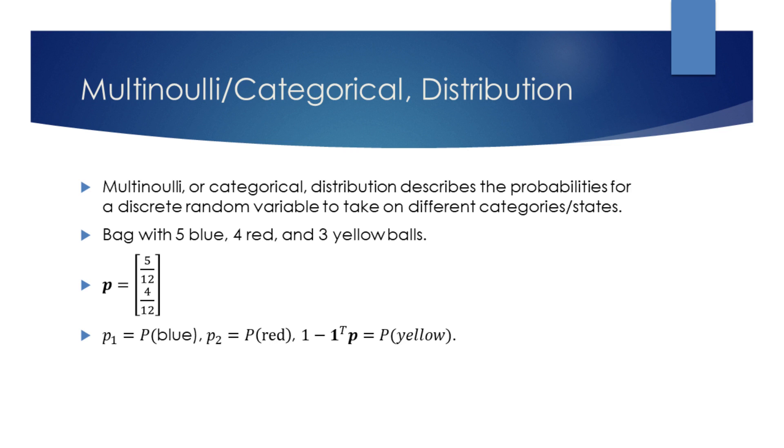We will have the second element describe the probability of drawing a red ball following the same logic as before. The second element of vector p will be equal to 4 twelfths.